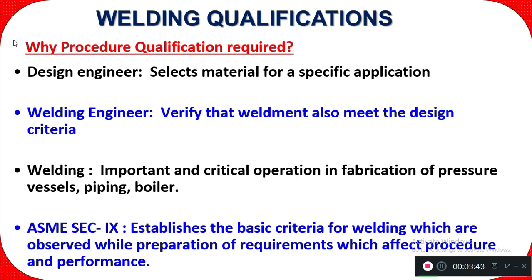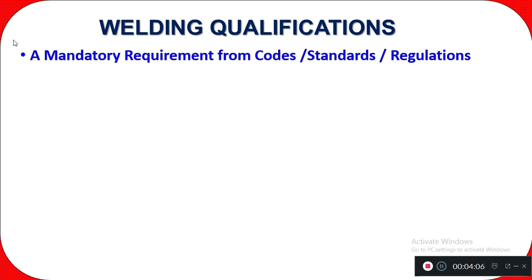When you are doing the welding, there are observations and requirements as per ASME Section 9 that you have to follow. This is a mandatory requirement from codes, standards, and regulations — it is mandatory for any project, in any industry. In accordance with the applicable code, standard, and regulation, this mandatory requirement for welding must be met.